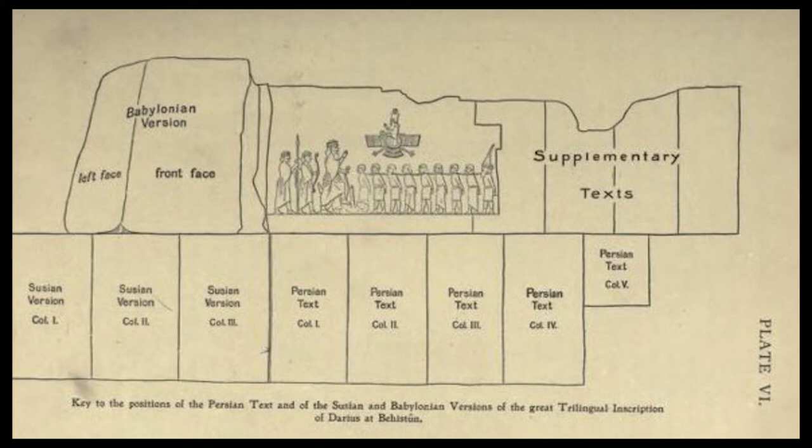Later in the inscription, Darius provides a lengthy sequence of events following the deaths of Cyrus the Great and Cambyses II, in which he fought nineteen battles in a period of one year, ending in December 521 BC, to put down multiple rebellions throughout the Persian Empire. The inscription states in detail that the rebellions, which resulted from the deaths of Cyrus the Great and his son Cambyses II, were orchestrated by several imposters and their co-conspirators in various cities throughout the empire, each of whom falsely proclaimed himself king during the upheaval following Cyrus's death.